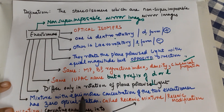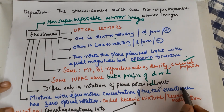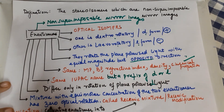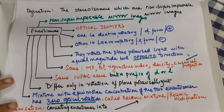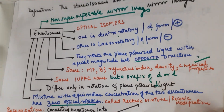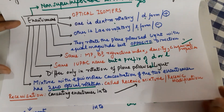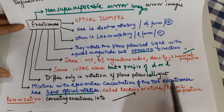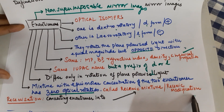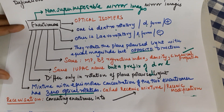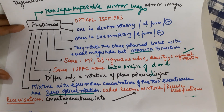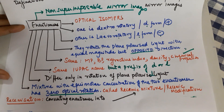A mixture of equimolar concentration of the two enantiomers will have zero optical rotation. Such a mixture is called a racemic mixture or racemic modification. Converting an enantiomer into a racemic mixture is called racemization. With this I close the class on optical isomerism.